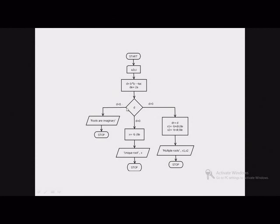If D is less than 0, this path is followed — B² is less than 4AC, so we cannot calculate the square root and roots are imaginary. We display the message 'roots are imaginary' and stop. If D is equal to 0, we get only one unique root, display the root value, and stop. If D is greater than 0, we get two roots: DR equals square root of D, then x1 and x2 are calculated and displayed. This flowchart is drawn to be suitable for using arithmetic if.